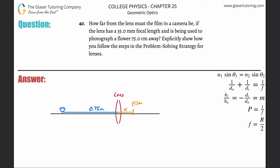Number 40. How far from the lens must the film in a camera be if the lens has a 35 millimeter focal length and is being used to photograph a flower 75 centimeters away? We're going to explicitly show how.